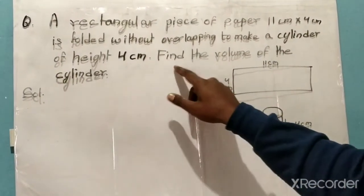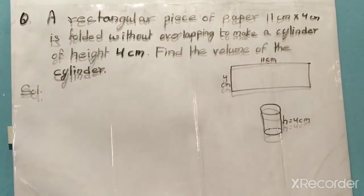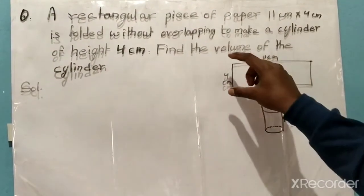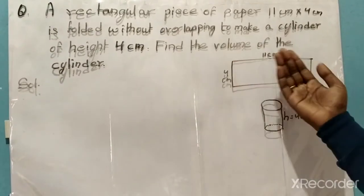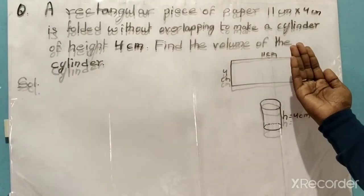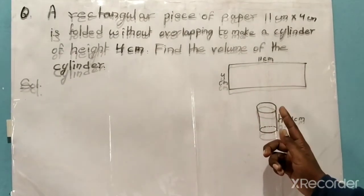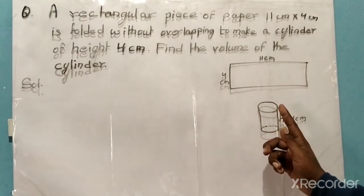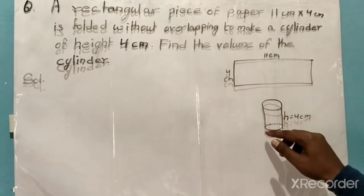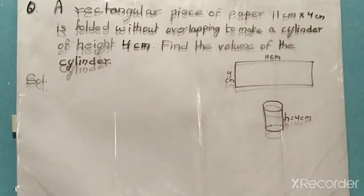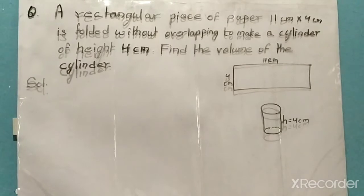In this question a piece of paper is given. I have drawn this piece of paper, and when we fold this paper it will become cylindrical in shape. So we have to find the volume of that cylinder. Please watch the video till the end so that the concept will be clear.